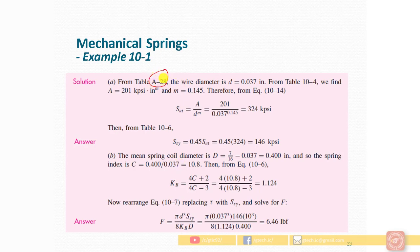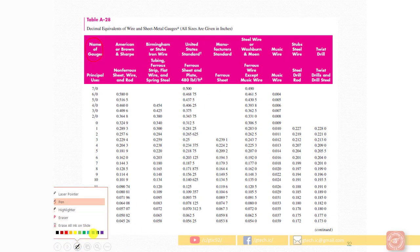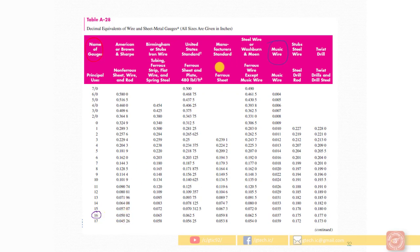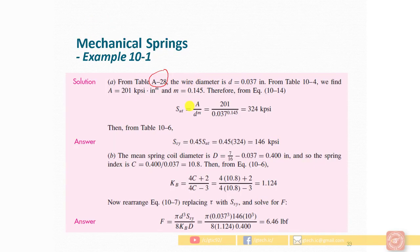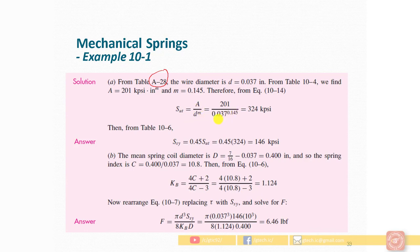First, we look at table number A28. In this table, the upper column shows the name of the gauge, with corresponding material properties. The material required is music wire. For gauge number 16 in the music wire column, the wire diameter is 0.037 inches. The ultimate stress formula is: S_ut = A / D^m.